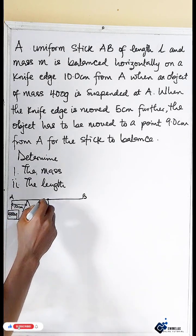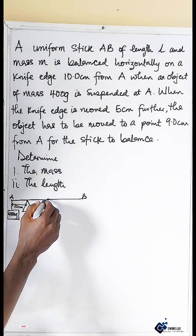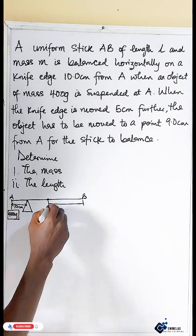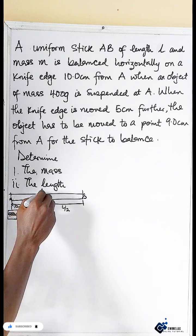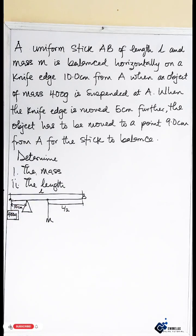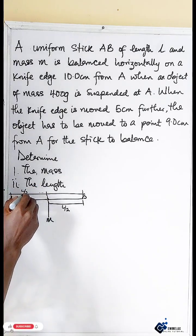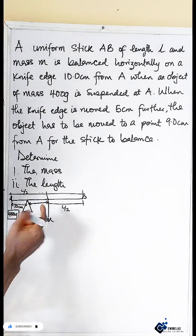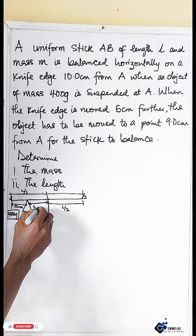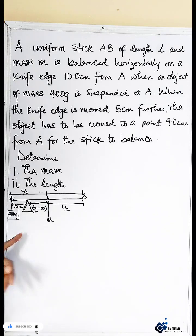From A to the knife edge is 10 cm. Since the center of the stick is at L/2 from either end, the distance from the knife edge to the center of the uniform stick will be L/2 minus 10. This completes the first case diagram.